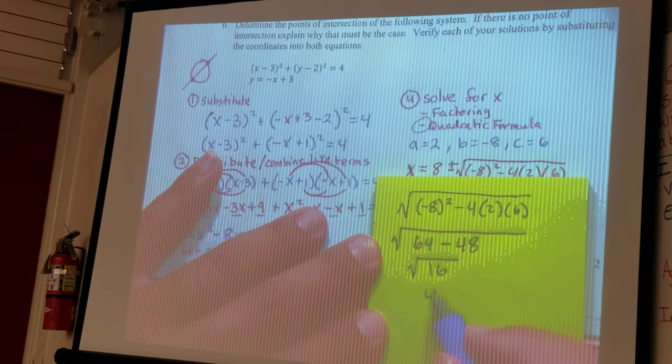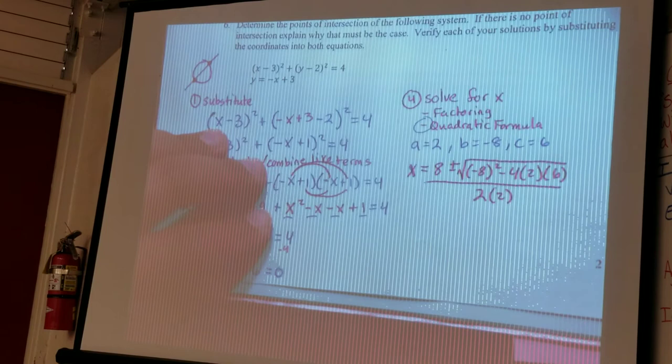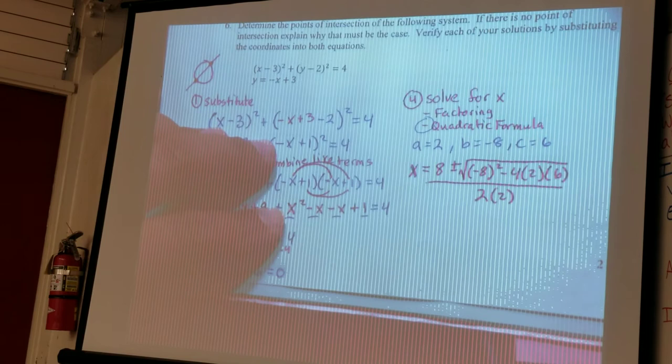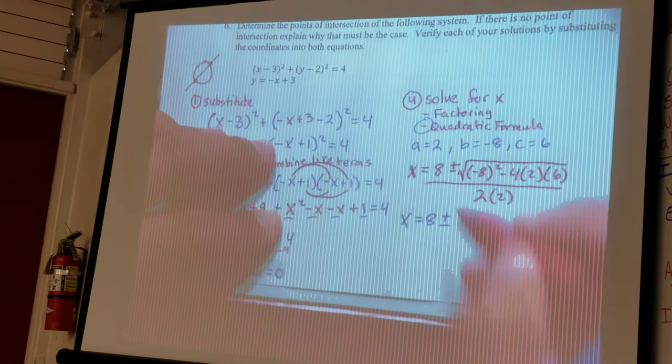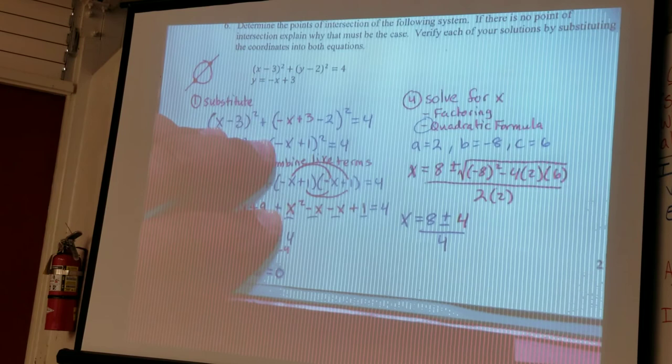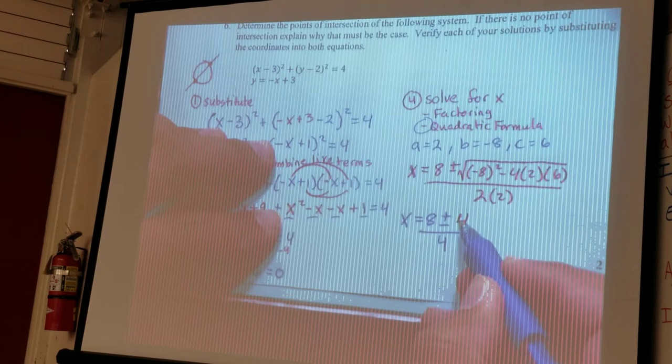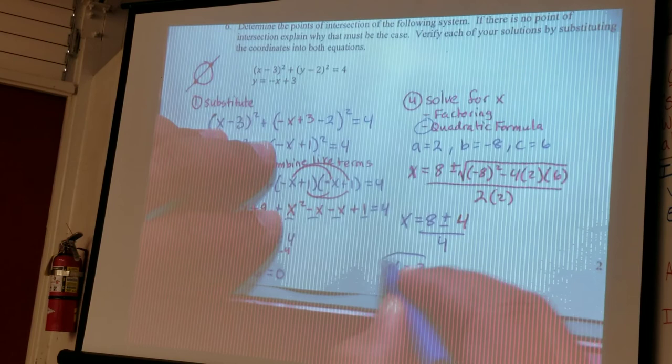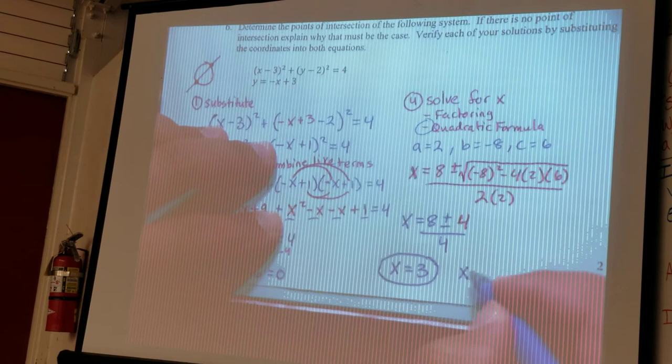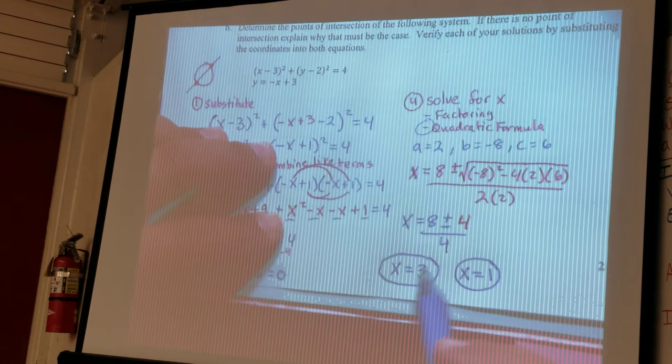So now I can replace this whole square root with the number 4. So I can rewrite this now as x equals 8 plus or minus 4, instead of using the square root, divided by 4. Okay, so 2 times 2 is 4. Now that I have this, I just solved this twice, one using plus and one using minus, so 8 plus 4 is 12, and 12 divided by 4 is 3, and then 8 minus 4 is 4, 4 divided by 4 is 1.